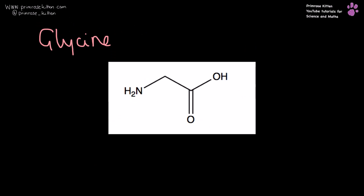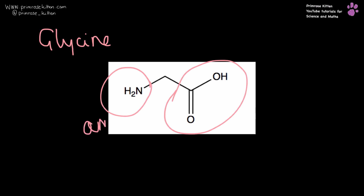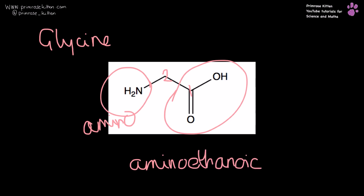Glycine here — nice easy one. Here is our carboxylic acid group, here is an amino group. We have one, two carbons here. So this is aminoethanoic acid.